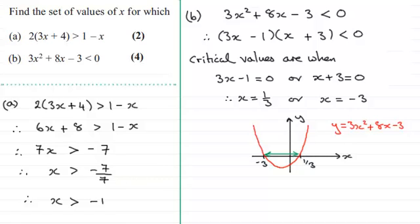So we can say then that therefore, from the graph, what we've got is that x lies between minus 3 and 1 third. So we write that in this style, x lies between minus 3 and 1 third.